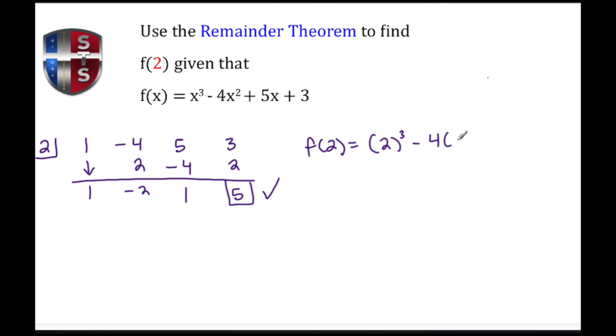So we have 2³ minus 4 times 2² plus 5 times 2 plus 3. We must follow our order of operations, which says exponents must be done first. So 2³ gives me 8, 2² gives me 4, 5 times 2 gives me 10, and then I write my 3.